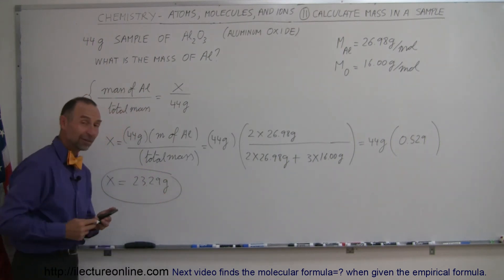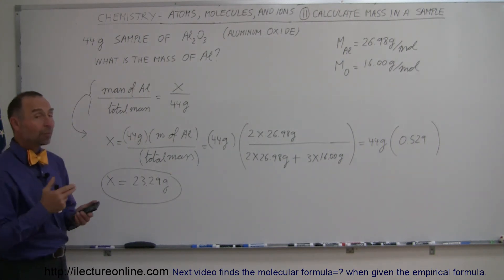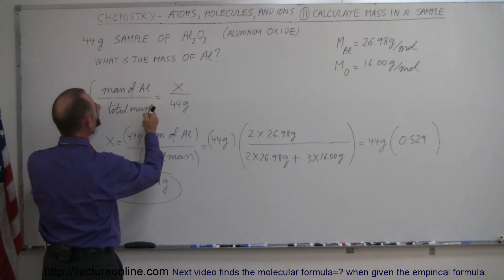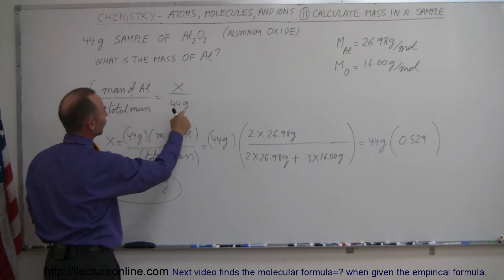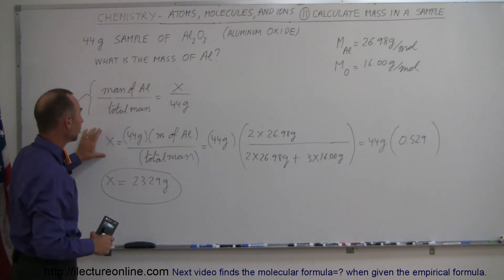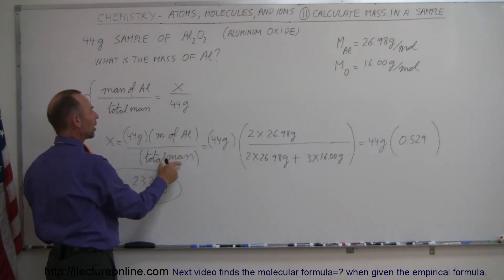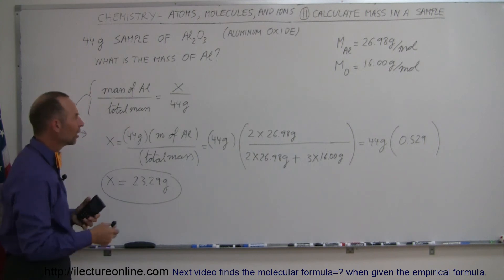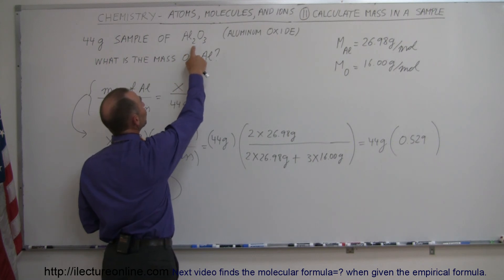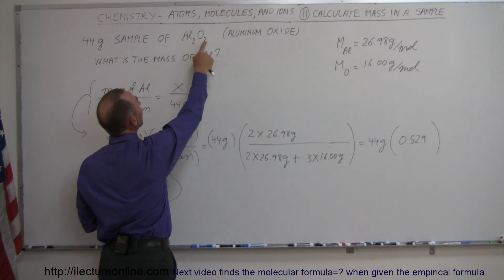So what that means is: given a 44 gram sample of aluminum oxide, we want to know how much aluminum is in our sample. We set up this ratio — the ratio of the mass of aluminum to the total mass must be x over 44 grams. X is the unknown amount, and we've solved this equation for x, so x equals 44 grams times the ratio of how much aluminum we have versus how much total mass we have. Each molecule of aluminum oxide has two atoms of aluminum and three atoms of oxygen.